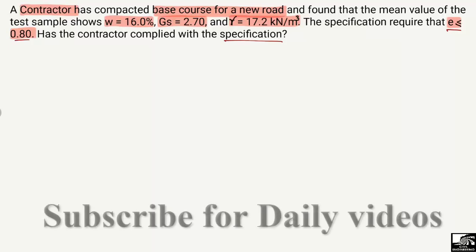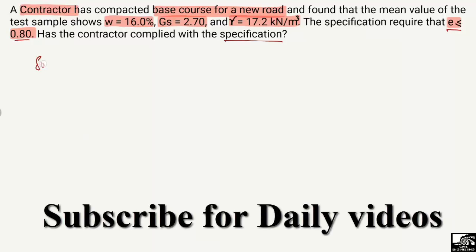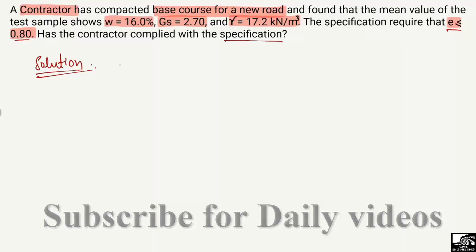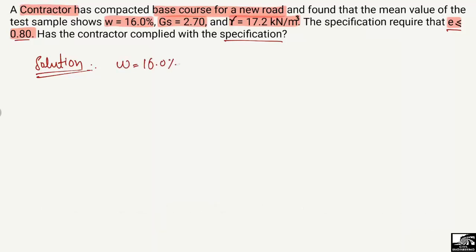Starting with the solution, the given data is: water content w = 16.0%, which in decimal is 0.16. Specific gravity Gs = 2.70. The unit weight of the soil, gamma, is given as 17.2 kilonewton per cubic meter.